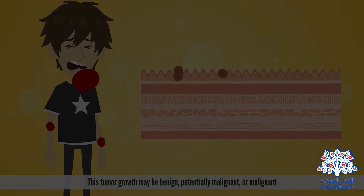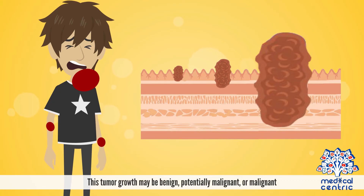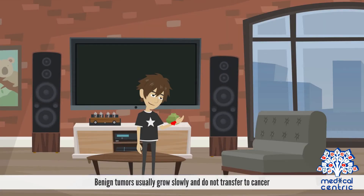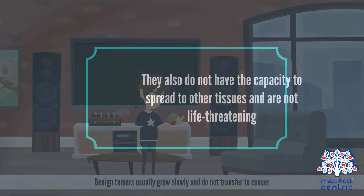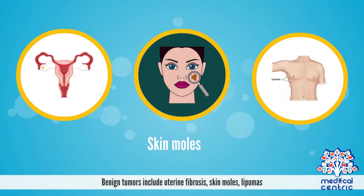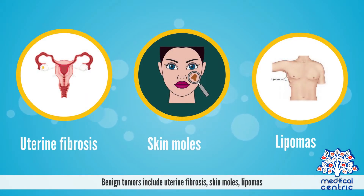This tumor growth may be benign or malignant. Benign tumors usually grow slowly and do not transfer to cancer. They also do not have the capacity to spread to other tissues and are not life-threatening. Benign tumors include uterine fibrosis, skin moles, and lipomas.